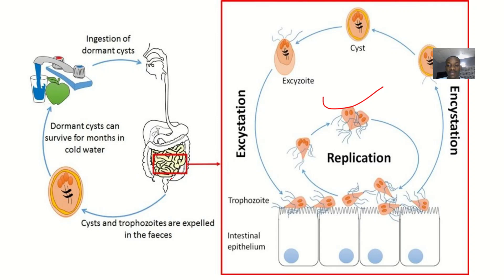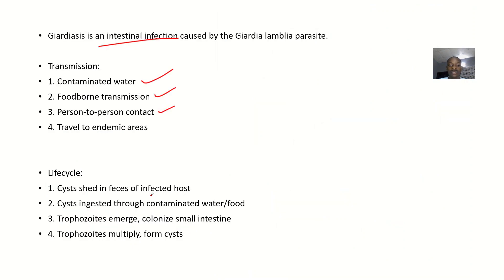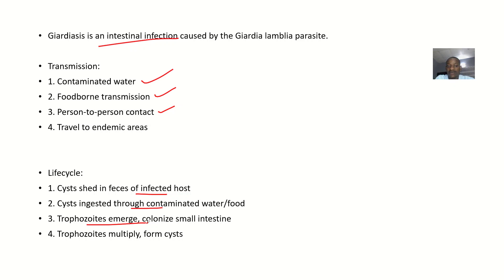Regarding the life cycle: when the organism is in humans, it ultimately gets expelled in feces. Those feces can then contaminate water or food. In areas where people practice open defecation, the same streams people defecate near may flow into another village where people consume water from that same stream. The trophozoites then emerge and colonize the small intestine again.